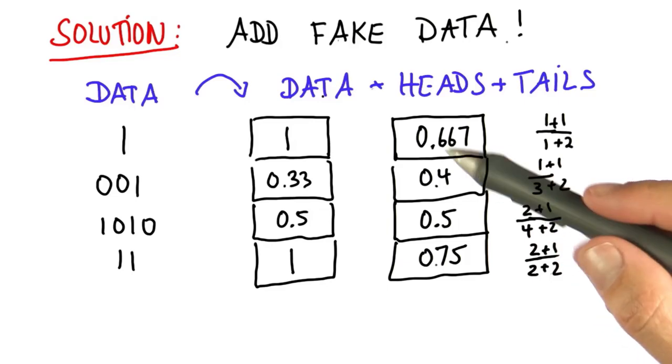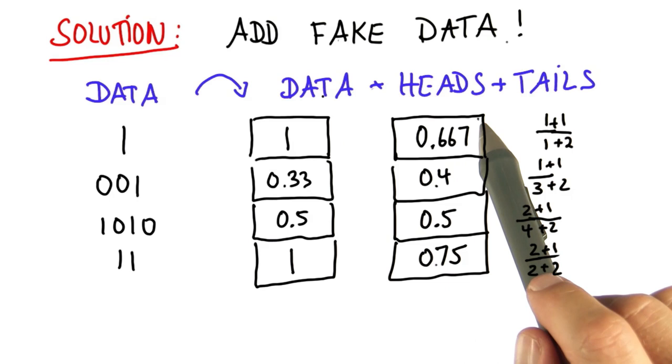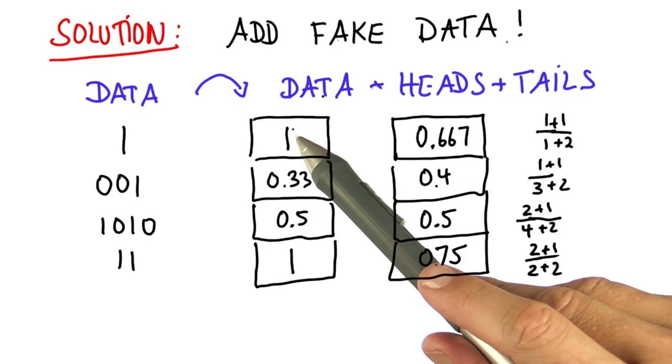So this is a couple of things to observe here. One is, in general, the fake data pulls everything towards 0.5. So whereas we go to extremes over here, we are less extreme in this case.